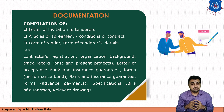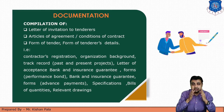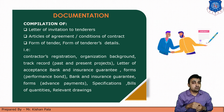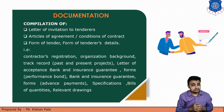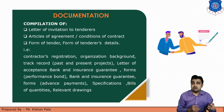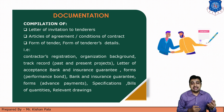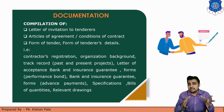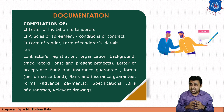The next process is documentation — this is one of the most important stages in the tendering process. The documentation includes the compilation of the letter of invitation of the tenders, article of agreement, conditions of contract, form of tender, and form of tender details such as contractor's registration, organization background, track record, letter of acceptance of bank, insurance guarantee, forms for performance bond, bank and insurance guarantee, forms for advance payments, specifications, bills of quantities, and relevant drawings. These are the required compilation of documents for the tendering process.